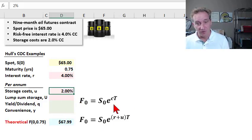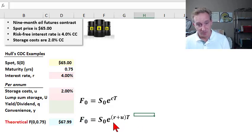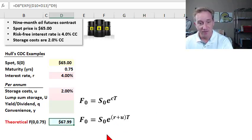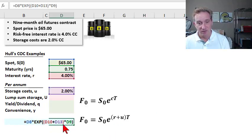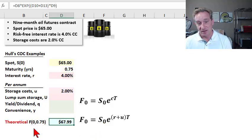Here's my general form, where small c is the net cost of carry, meaning I can have up to the four factors. And then in this case, my specific instance of it, which includes the risk-free rate and the storage cost. And you can see I've just implemented that in Excel, pretty straightforward. And I get the theoretical nine-month futures price of $67.99 or just shy of $68.